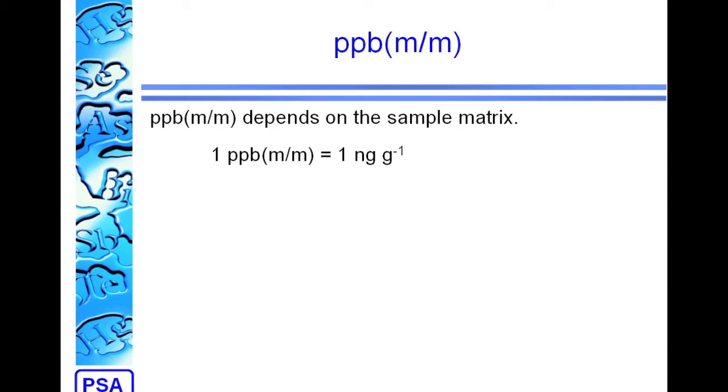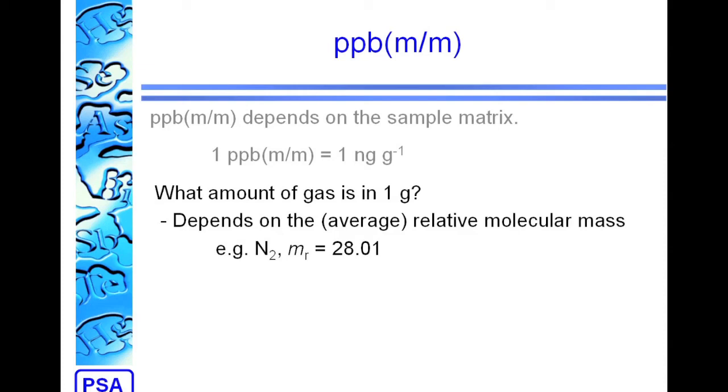Moving on to look at PPB mass. This depends on the sample matrix, as we have mass on the bottom of the expression. So, 1 part per billion on a mass basis is the same as 1 nanogram per gram. The first question we have to answer is what amount of gas is in 1 gram? This depends on the relative molecular mass of the gas.